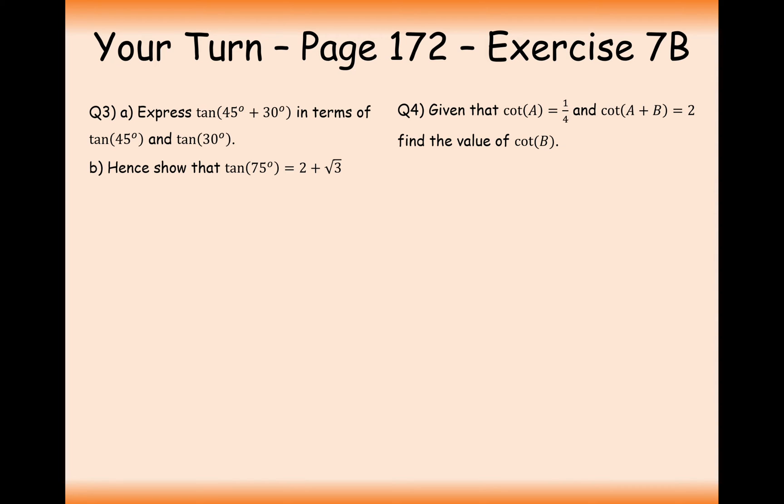Okay let's start having a go at question 3A then. We're going to express tan of 45 plus 30 in terms of tan 45 and tan 30. Well this is just applying the tan A plus B rule. So tan 45 plus 30, that's going to be tan 45 plus tan 30 all over, and I need a reminder where the negative is. The negative is on the bottom so it's going to be 1 minus tan 45 tan 30. And do remember that these formulas are in the formula booklet. There's no harm in having a look for them.